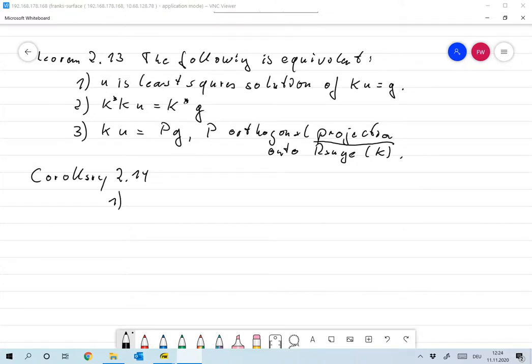First, I already mentioned this. ku equals g has the least square solution, or also a minimum norm solution, if and only if g is in the range of k plus the kernel of k adjoint, which is the same as the range of k plus the range of k perp.